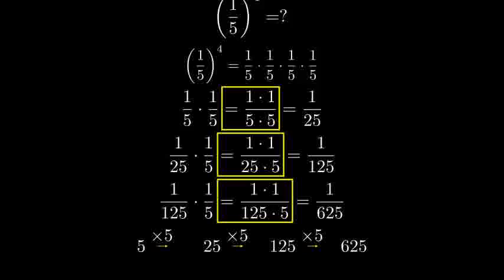Therefore, one-fifth raised to the fourth power equals one over six-hundred-twenty-five. As a decimal, this is approximately zero point zero zero one-six.